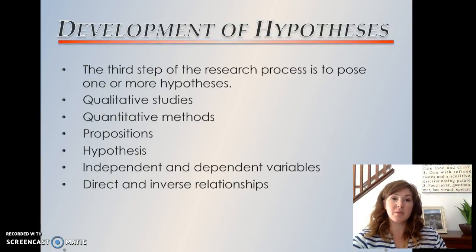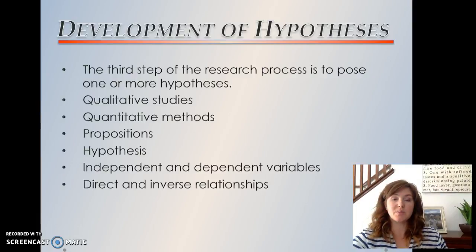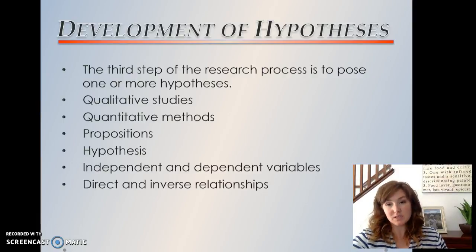The next step is to develop the hypothesis. We are going to look at qualitative and quantitative methods — qualitative methods are more like ethnographic research or literary analysis, while quantitative methods look at numbers and statistics. We're going to look at what is being proposed, create a hypothesis about what we think is happening with social institutions and social constructions, and look at independent and dependent variables as well as direct relationships and social patterns.